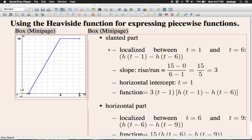Here is an example of using the Heaviside function for expressing piecewise functions. The graph of the function is given here. It has two non-zero parts: a slanted part and a horizontal part.